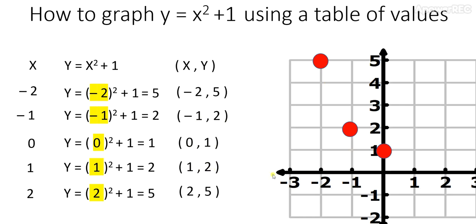For 1 comma 2, we go 1 to the right, 2 up. And to plot 2 comma 5, we go 2 to the right and 5 up. And that's step 2.